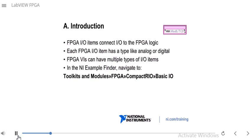Each FPGA-IO item has a type like analog or digital. You might have an analog input coming into the FPGA, or a digital output that the FPGA is sending out. FPGA-VIs can have multiple types of I/O items — analog inputs, outputs, and digital I/O lines. If you go to the NI Example Finder, navigate to Toolkits and Modules > FPGA > Compact-RIO > Basic I/O to see examples.